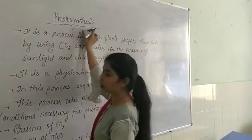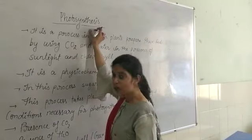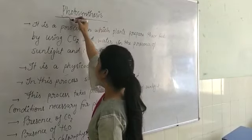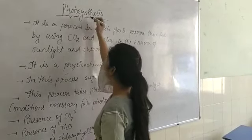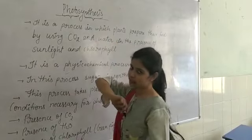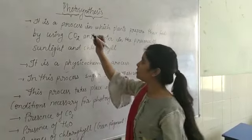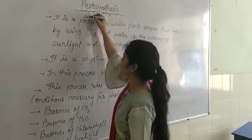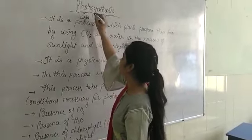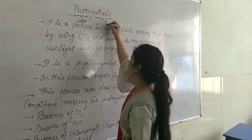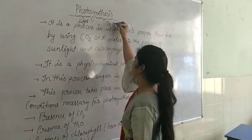Photosynthesis is a word which is made up of two words. The first one is 'photo' and the other one is 'synthesis.' Photo means light and synthesis means to produce something.